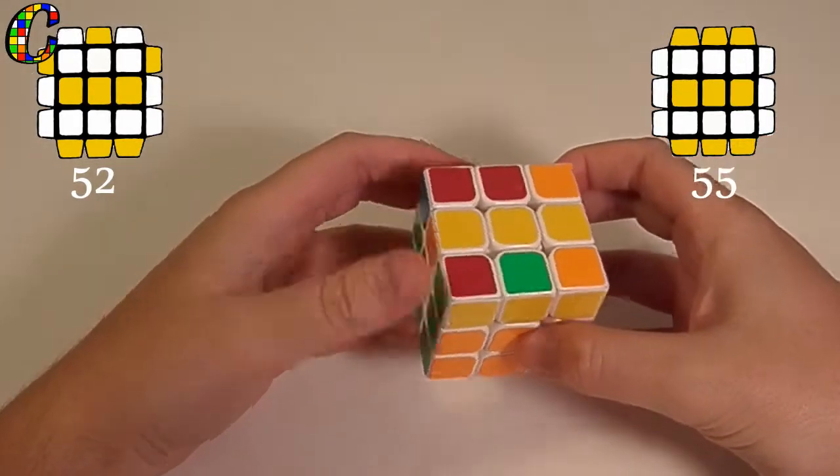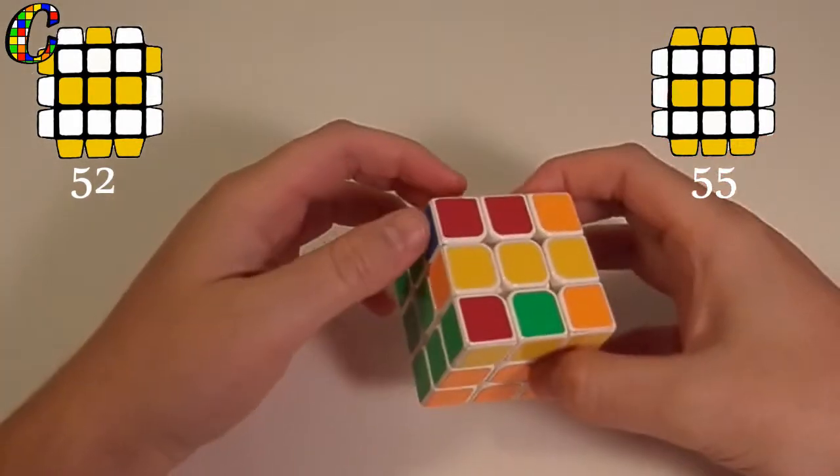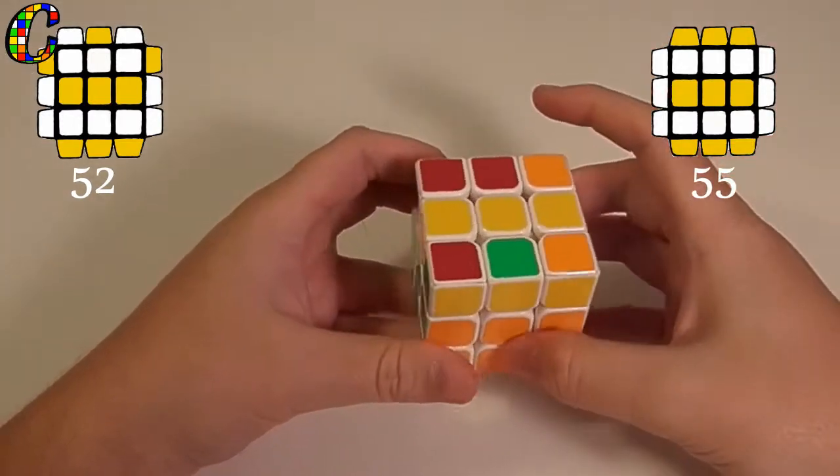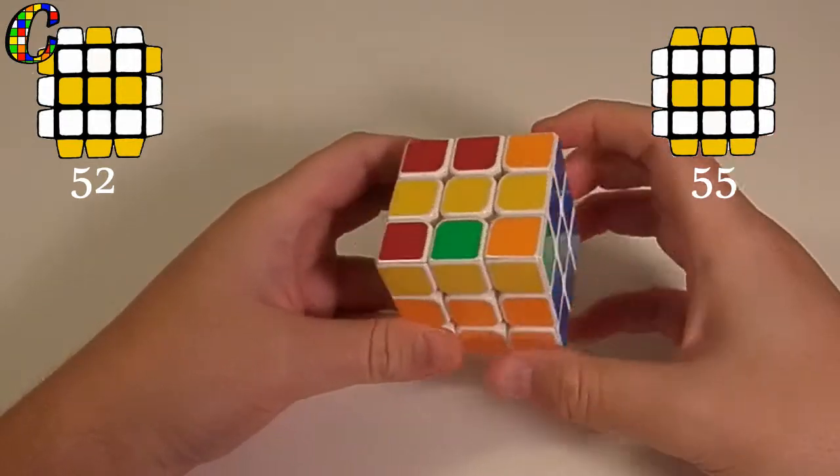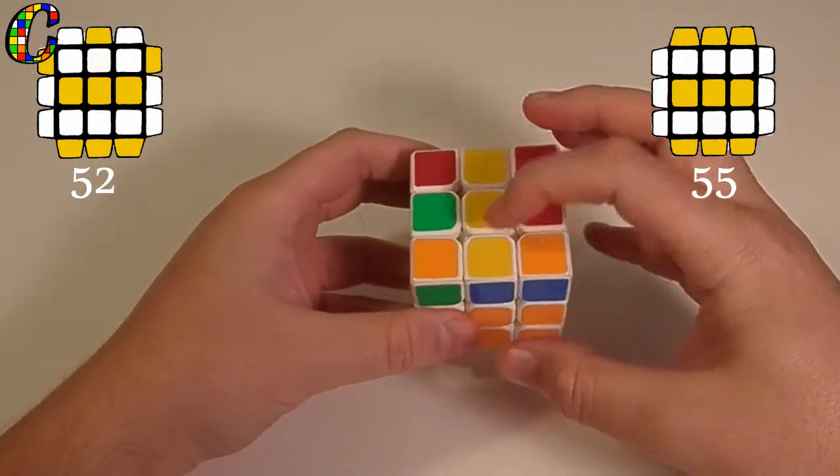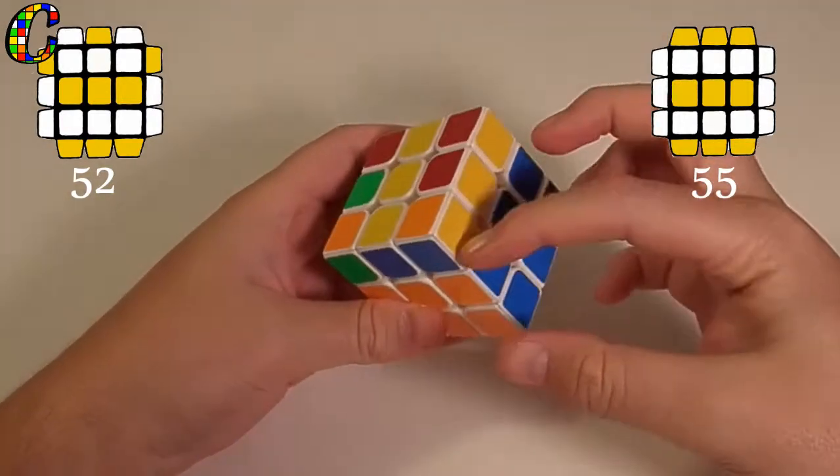And if either of these back corners show a yellow piece pointing out, you know you have the case before this one. But, if you see that neither one of them show the top color, you know that you have OLL number 55, with a bar running down the middle, and a bar on either side.